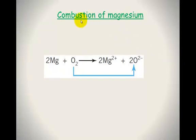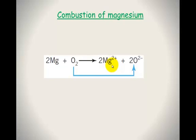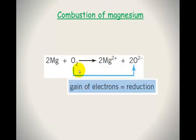Let's have a look at an example — the combustion of magnesium, which we've done a couple of times this year. You've got magnesium solid reacting with oxygen from the air, and it makes magnesium oxide. I've separated this equation to show you the oxidation and reduction sides of the reaction. Oxygen has gone from being O2, which has a neutral charge, to 2O²⁻, gaining a 2-negative charge — meaning it's gained 2 electrons. This is the reduction reaction.